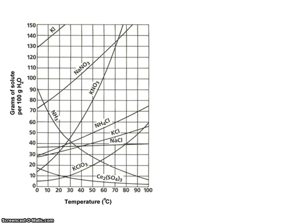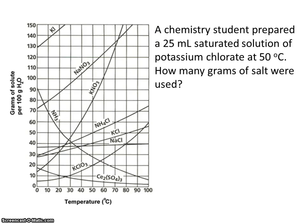Let's do one more problem. A chemistry student prepared a 25 milliliter saturated solution of potassium chlorate at 50 degrees C. How many grams of salt were used? Let's first find potassium chlorate. So here's potassium chlorate, and once again, the line represents the saturation amount, or how many grams of this salt will dissolve in 100 grams of water.